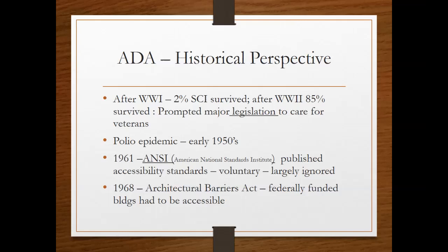That big difference prompted major legislation to care for veterans, and from that we've had several pieces of legislation that came forward for the ADA. In addition, the polio epidemic happened in the early 1950s. Polio paralyzes your muscles, and we didn't have ventilators back then — we had iron lungs. People had to be put in these huge iron lungs to be able to breathe and sustain life during that virus. That happened in the 1950s.